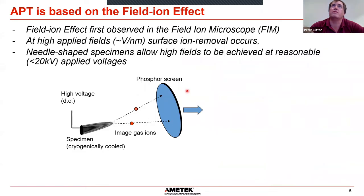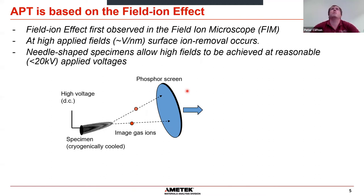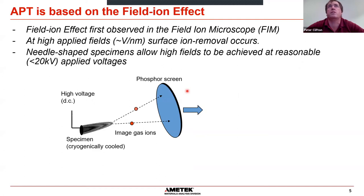Moving atoms one at a time sounds like magic, but essentially we use a high field to remove the atom. If you have a flat surface you need a really very high field — tens of volts per nanometer — to stimulate surface ion removal. Fortunately, if your surface is curved, this gives field enhancement and you need less voltage. If you can make a specimen which is a sharp needle with a tip radius of around 100 nanometers, for a modest specimen voltage we can achieve the fields we need.